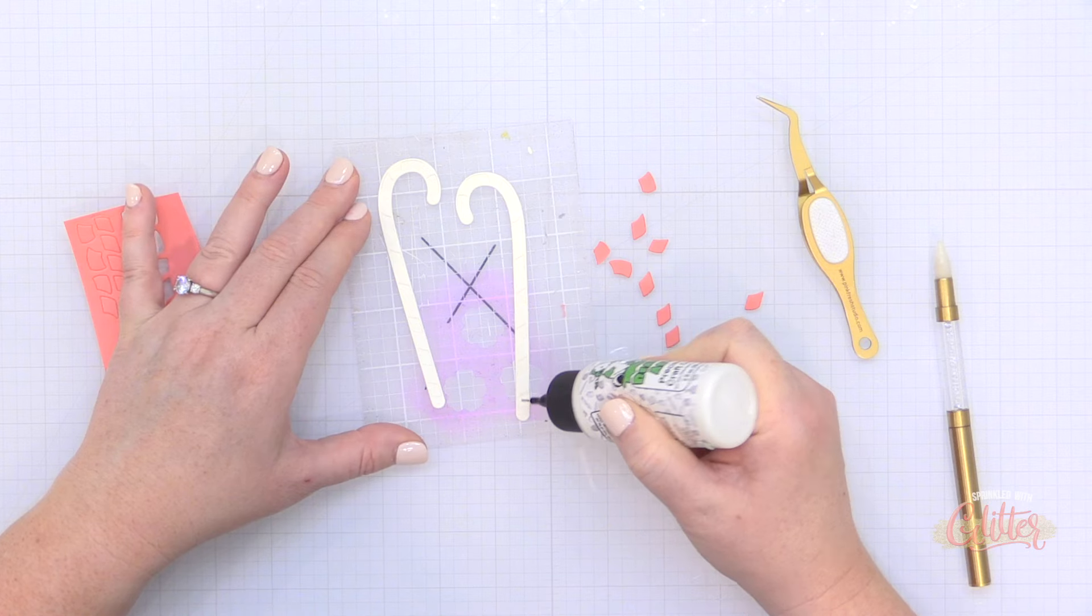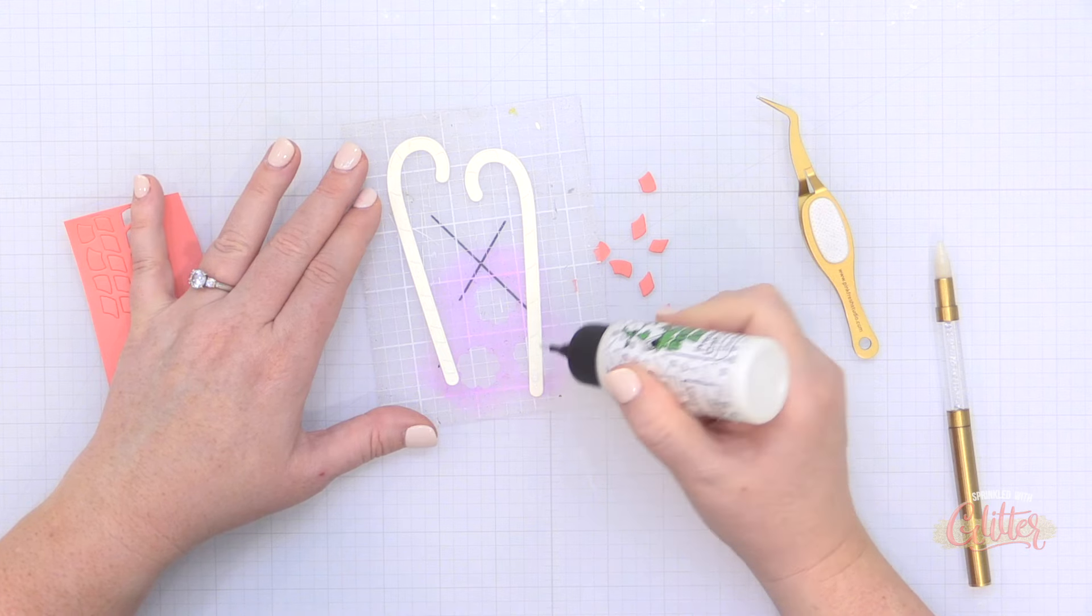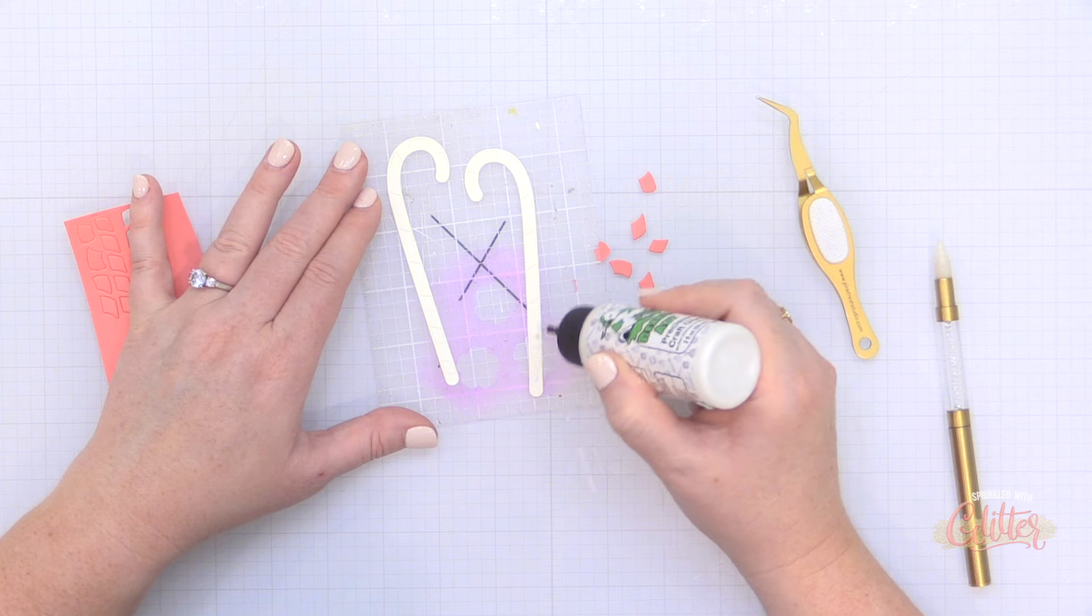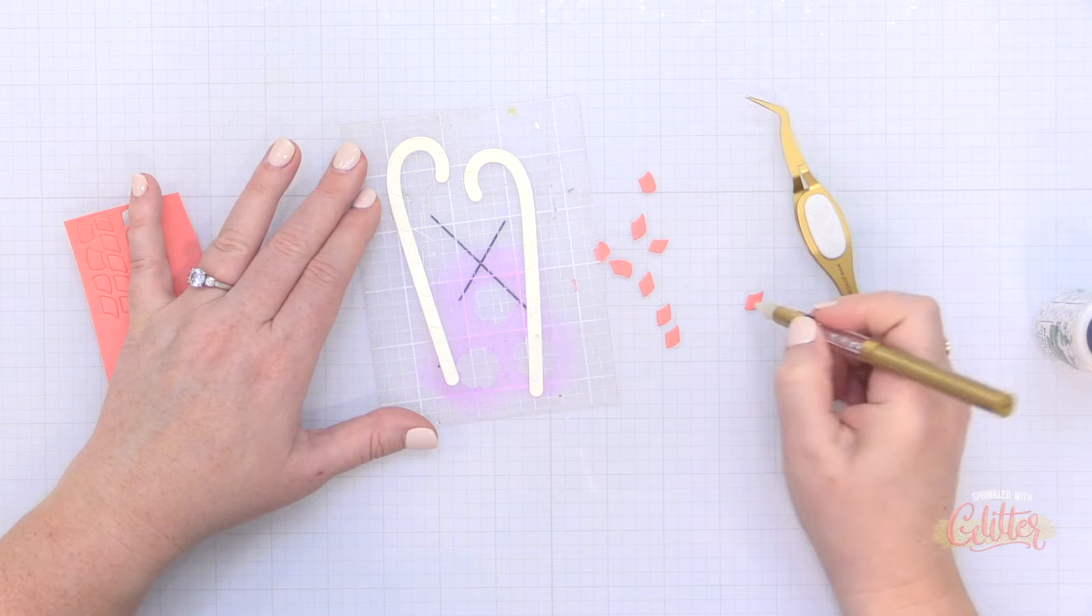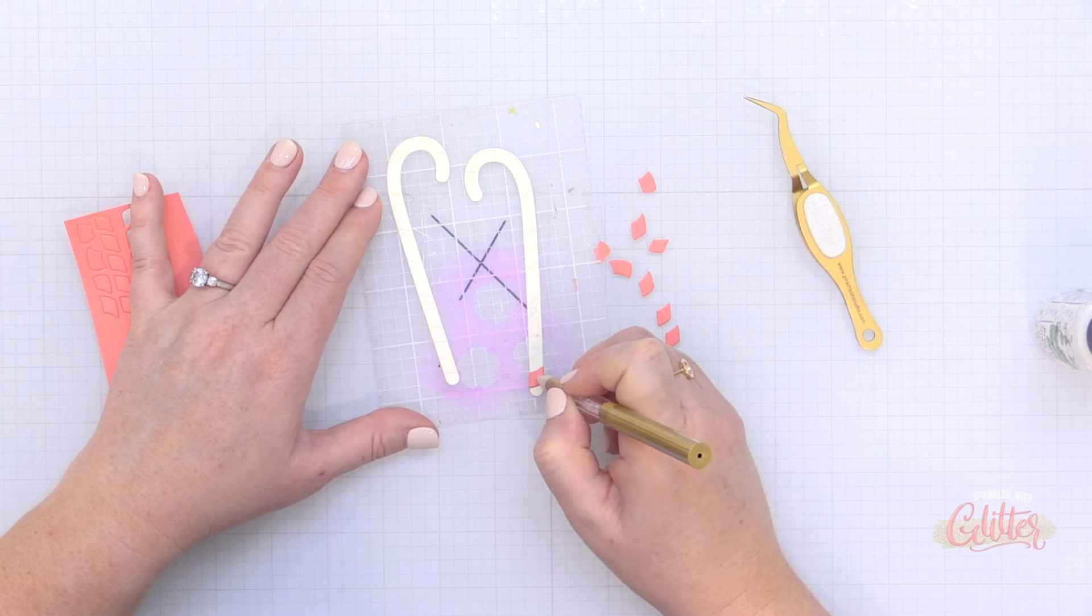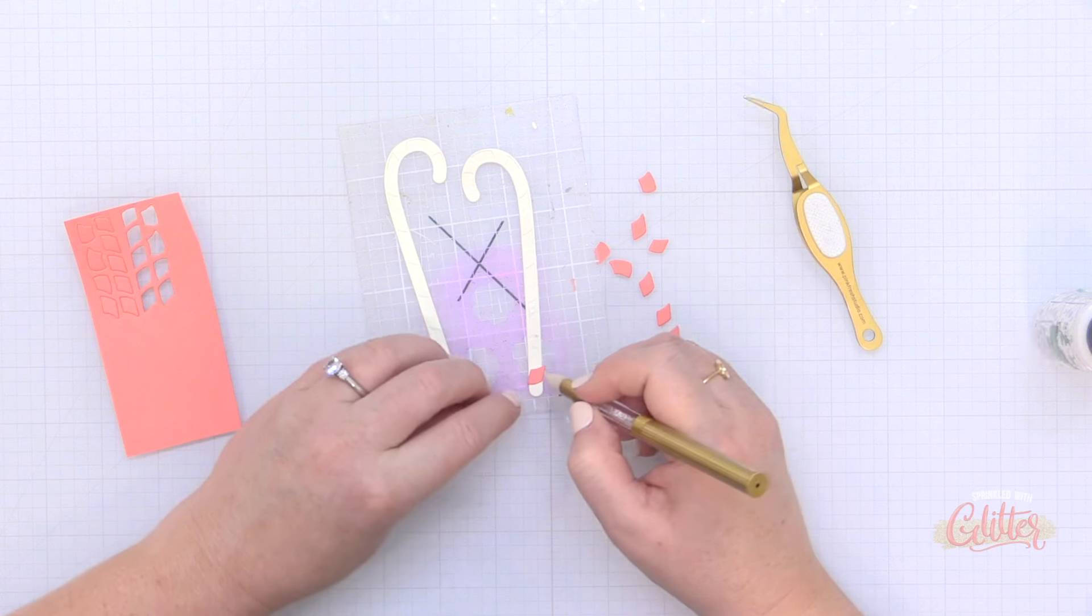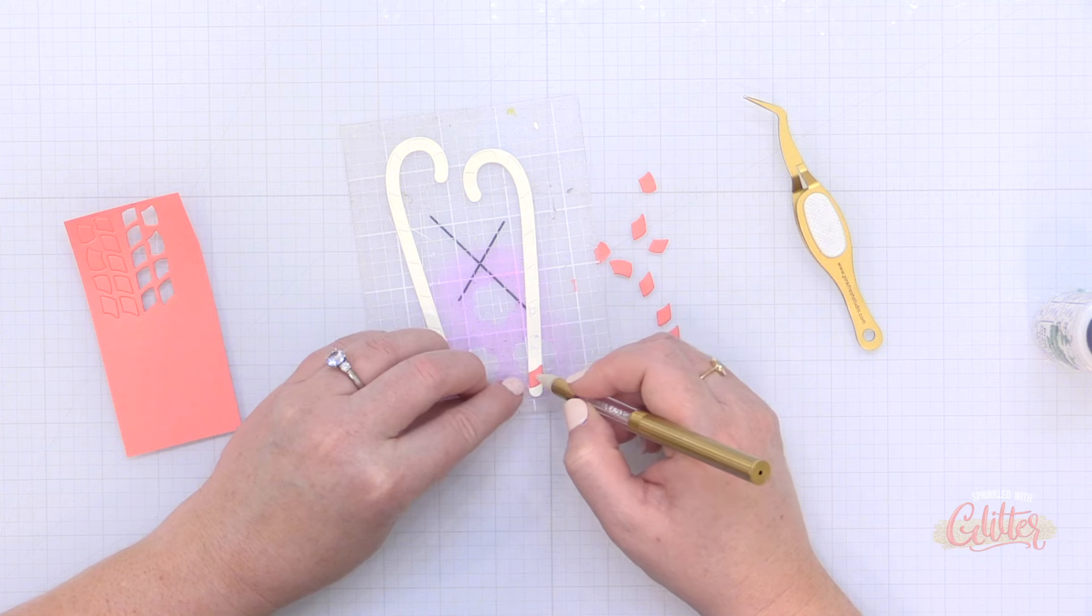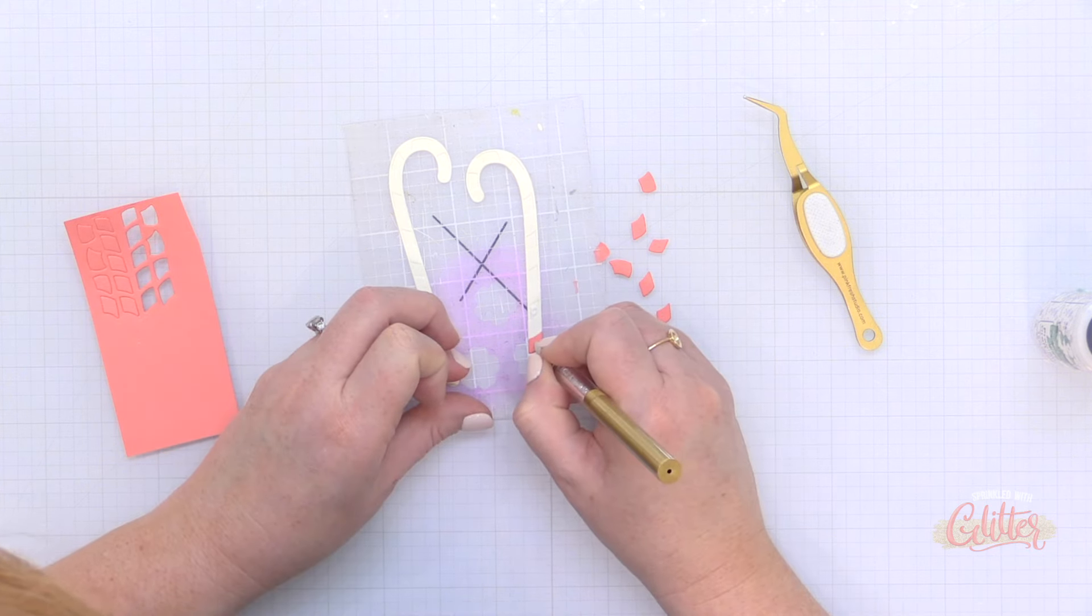Now when I'm adhering these stripes to the candy canes there are some indentions on the die cuts that the die creates and so I am using those for my guide. I'm just adding a little bit of liquid glue inside of those indentions and then the stripes from the candy cane that die cut with the die they nestle right into those indented little grooves there and you can just wiggle them into place.